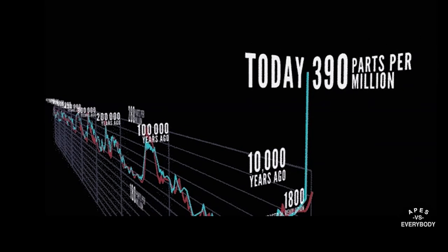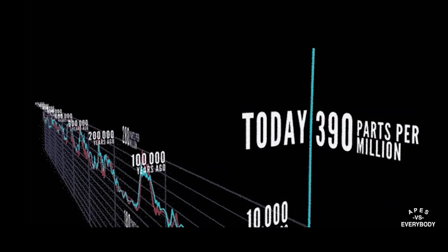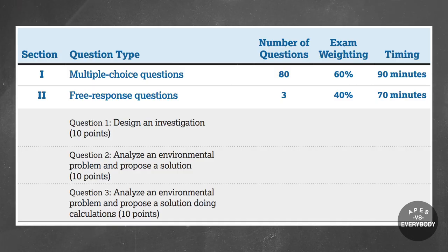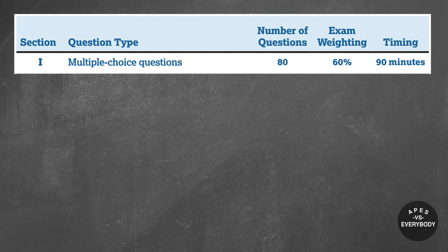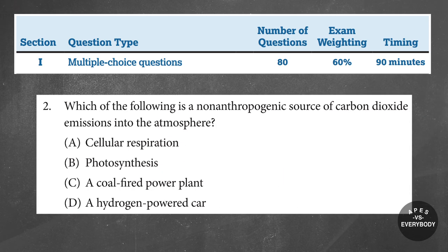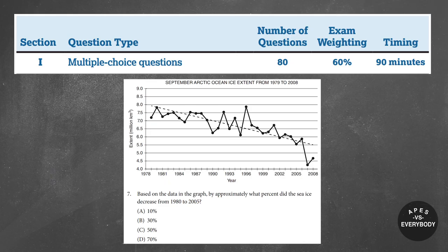And spoiler alert — the Earth is changing very rapidly, and it's because of all the human activity you'll learn about in Units 1 through 8. When it comes to the exam, you'll need to answer 80 multiple-choice questions in 90 minutes and 3 FRQs in 70 minutes. The multiple-choice questions will have a variety of formats, with some asking for straight-up factual recall and others providing you with a stimulus such as a graph, figure, or even a scientific passage.